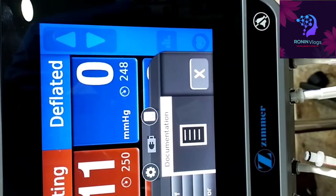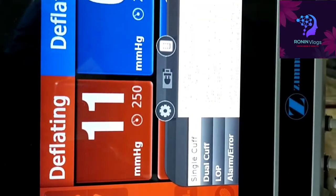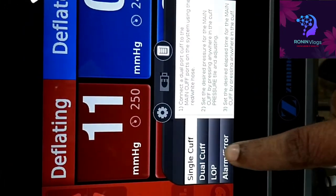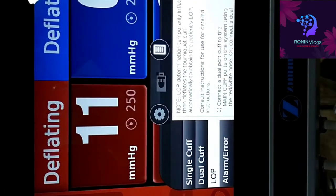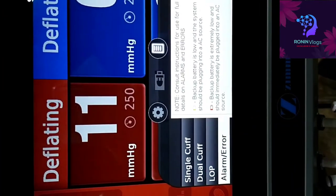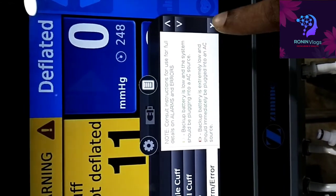Now another, the documentation. It will give the information about dual cuff, LOP, alarm, error, like that. Information is available here in this option.